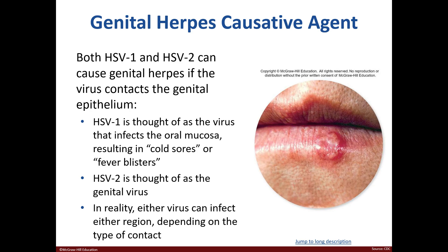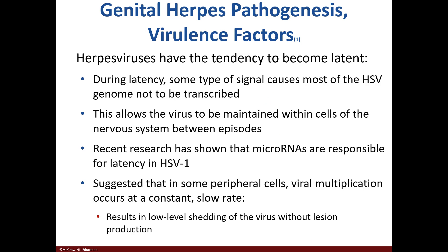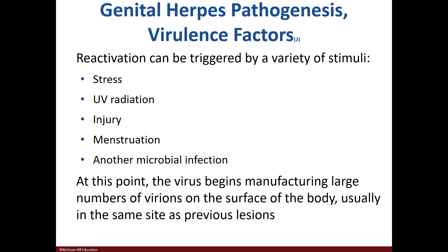The causative agents for genital herpes include both HSV-1 and HSV-2. HSV-1 is associated with cold sores, but depending on the type of sexual contact, can be transmitted to the genital region. The herpes viruses become latent, which enables them to be maintained in cells. They can be reactivated by stress, menstruation, or other infections, after which the virus then produces virions.